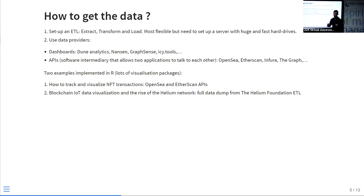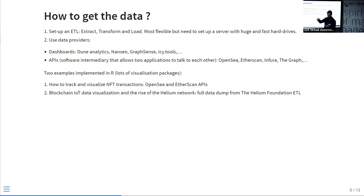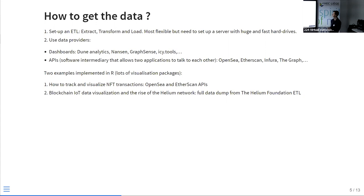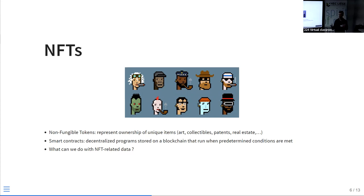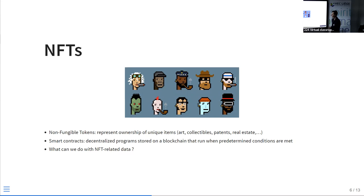We'll see two examples implemented in R, a programming language used by data scientists. We'll see how to track and visualize any transactions. The first example is NFT-related, and the second is about blockchain IoT — the visualization of the rise of the Helium network. NFTs, or non-fungible tokens, are used to represent ownership of something unique, for example art.